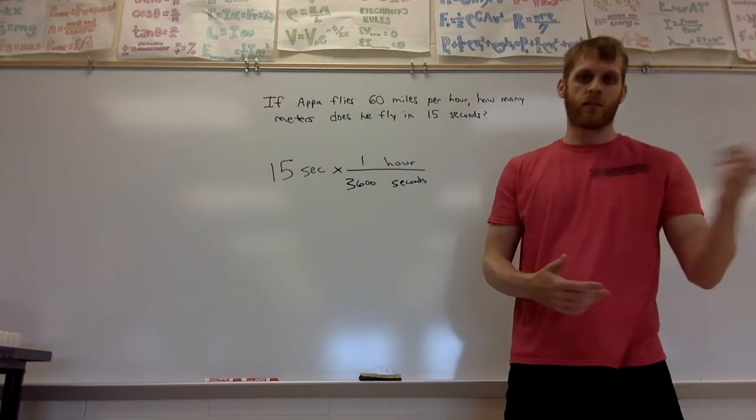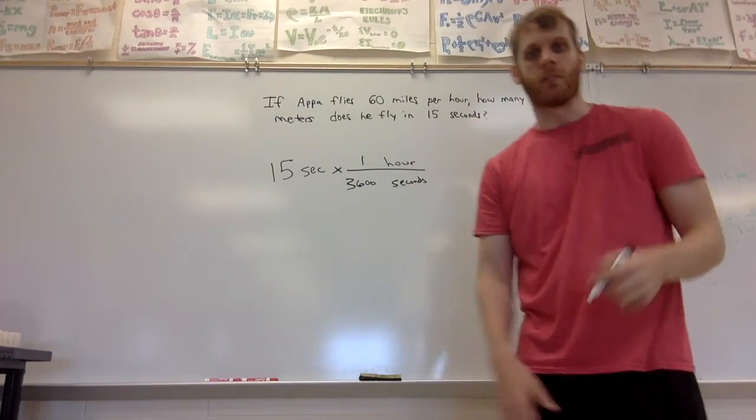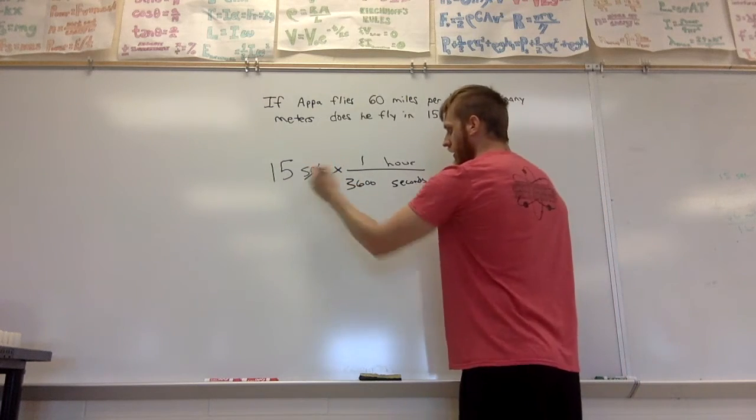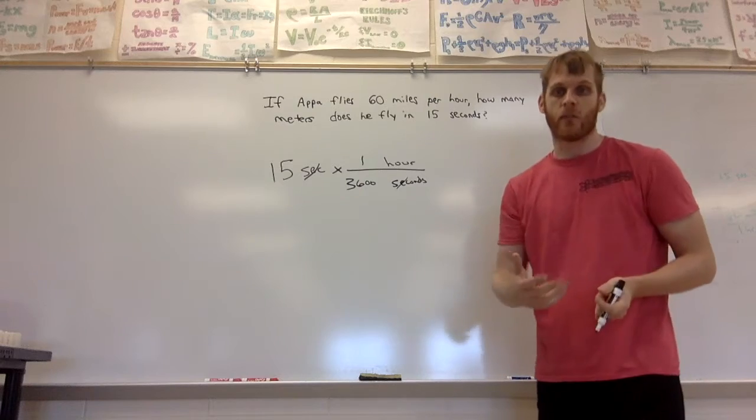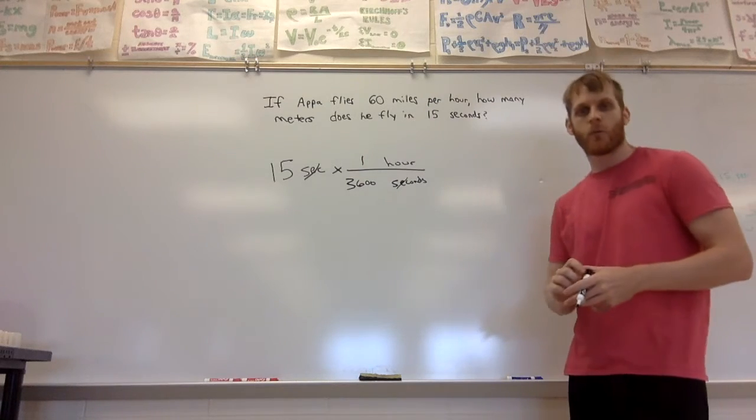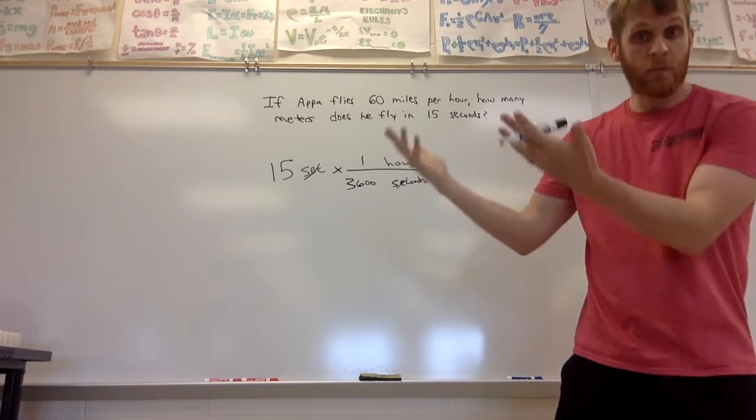60 seconds in a minute, 60 minutes in an hour, 60 times 60 is 3600. So now the seconds cancel with seconds, and I can figure out how many hours he traveled. If the question was how many hours does he travel, this would be my answer. Just multiply 15 times 1 divided by 3600.